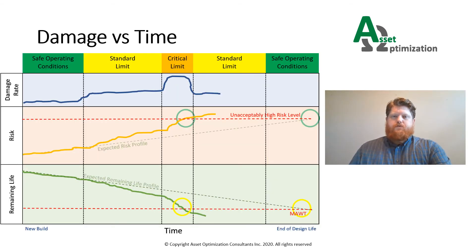This graphic shows the relationship between damage rate, risk, and remaining life as the process variables move farther outside the safe operating conditions. Notice the major inflection points when crossing from standard limits to critical limits. Also notice how the risk profile becomes unacceptable sooner, as noted in the green circles, and how the expected remaining life becomes shorter, noted in the yellow circles, as the equipment is permanently affected by operation outside the integrity operating windows.